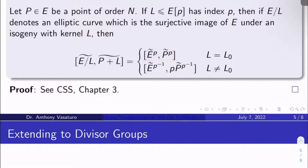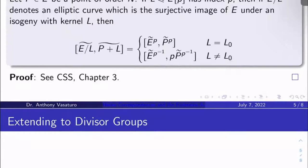What happens if L isn't L₀? What if L is just some other subgroup of the p-torsion of E of index p that isn't the kernel of the reduction map?